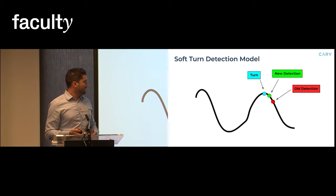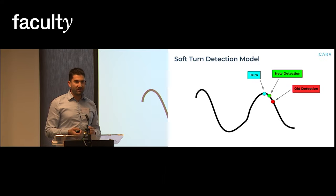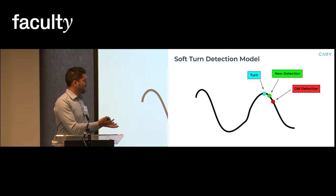My model is able to identify a turn now much earlier. Where you see the old detection time is where you see the red dot and the new detection time is now reduced to where you see the green dot.